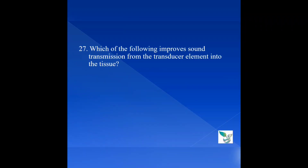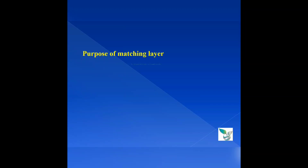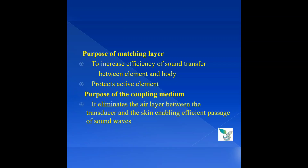Moving on to question number 27: Which of the following improves sound transmission from the transducer element into the tissue? Option A, matching layer; option B, Doppler effect; option C, coupling medium; option D, both A and C. The answer is both A and C. The purpose of the matching layer is to increase the efficiency of sound transfer between the element and body, and to protect the active element. The purpose of the coupling medium is to eliminate the air layer between the transducer and the skin, enabling efficient passage of sound waves.